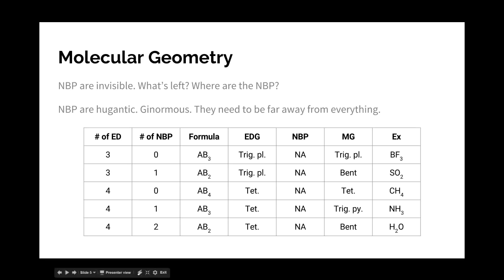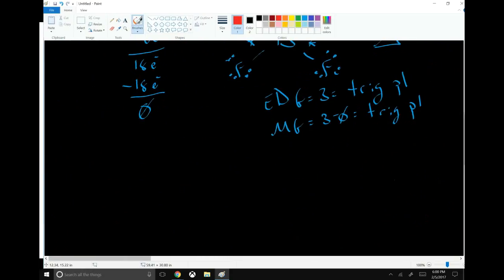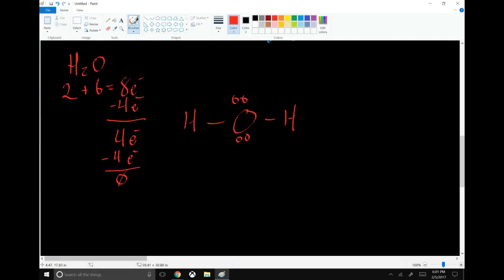And our next example, the last of the tetrahedral geometries, is going to be water. Water, again, is our go-to example. So now H2O. You have two electrons from hydrogen. Six electrons from oxygen is eight total. So H2O bonds uses up four electrons, leaving four electrons that go on oxygen as non-bonding pairs. And that uses everything up. So now we have still four electron domains, two bonds, two non-bonding pairs.